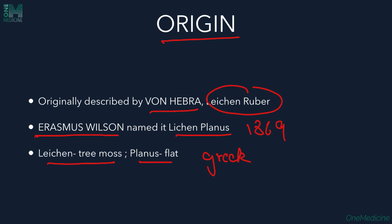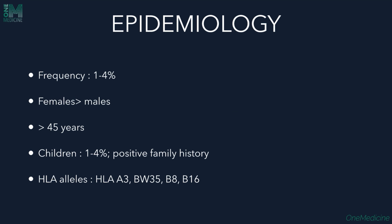The frequency of Lichen Planus is 1-4%. Females are most commonly affected than males. The most common age group is more than 45 years. Children are also affected, up to 1-4%, and usually children have a positive family history. HLA alleles associated are HLA-A3, HLA-BW35, HLA-B8 and B16.